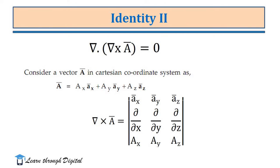The second identity is del dot (del cross A-vector) equals 0 — that is, divergence of curl of any vector is equal to 0. We are going to prove this identity. We consider A-vector in Cartesian coordinate system: A-vector equals Ax ax-vector plus Ay ay-vector plus Az az-vector. Now we write the curl of A-vector in matrix form: the first row is the unit vectors, the second row elements are the del operator, and the third row elements are the vector components Ax, Ay, Az.